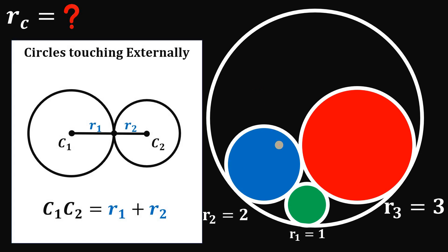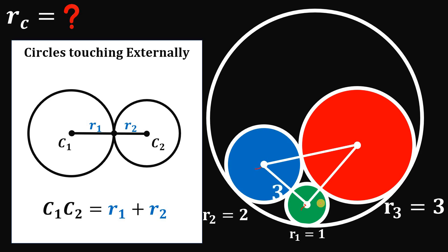First, let's find the centers of these three circles and connect all of those centers. The measure of the first segment must be equal to 1 plus 2, or simply 3 units. This segment measures 1 plus 3, or simply 4 units. And this segment must be equal to 2 plus 3, or simply 5 units. This is very important because we have a triangle with sides 3, 4, 5 — so this is definitely a right triangle.